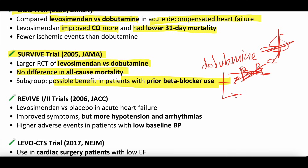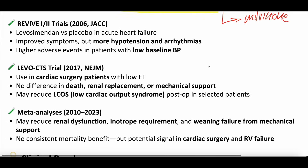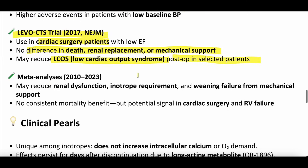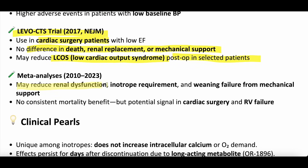In the US, patients on beta-blockers are often given milrinone instead of dobutamine because milrinone works on phosphodiesterase-3 receptors. The REVIVE I and II trials in 2006 in JAMA compared levosimendan versus placebo in acute heart failure — improved symptoms, but more hypotension and arrhythmias. The LEVO-CTS trial in 2017 in the New England Journal of Medicine looked at death, renal replacement therapy, and mechanical circulatory support — it may reduce low cardiac output syndrome post-op in selected patients. Meta-analyses suggest it may reduce renal dysfunction, improve inotrope requirements, and improve weaning from mechanical circulatory support, but no consistent mortality benefit.